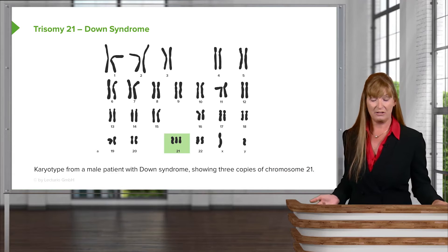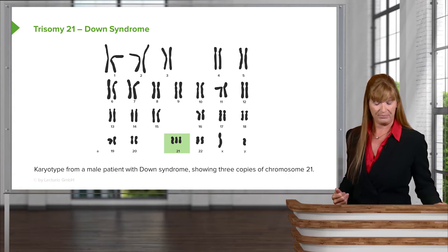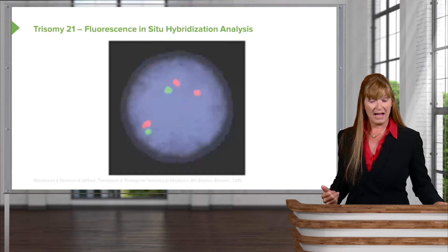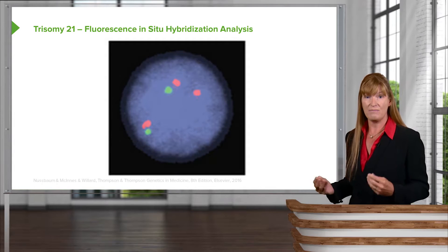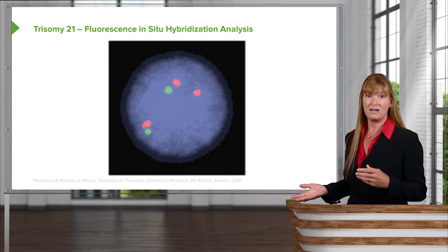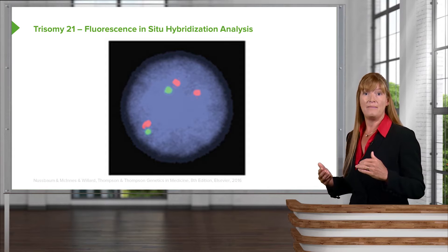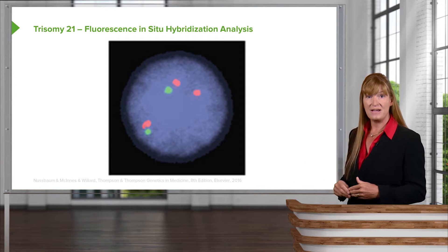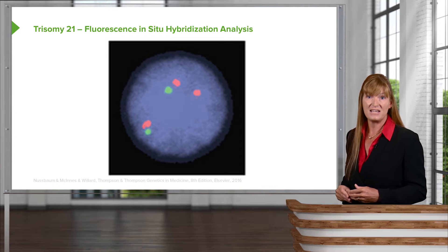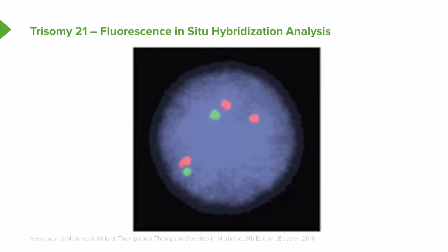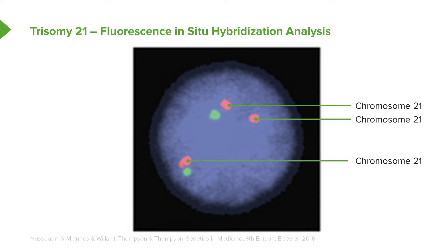You can see in this karyotype that there are clearly three chromosome 21s. Here is a graphic of FISH — fluorescence in situ hybridization — where the chromosomes have been stained. Chromosome 21 has been stained in red fluorescence and chromosome 13 is stained in green fluorescence.